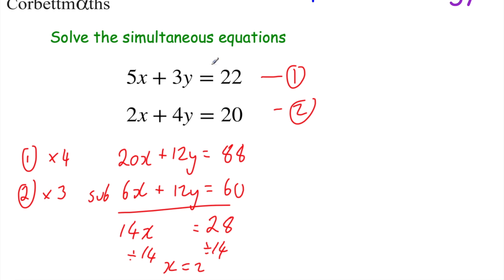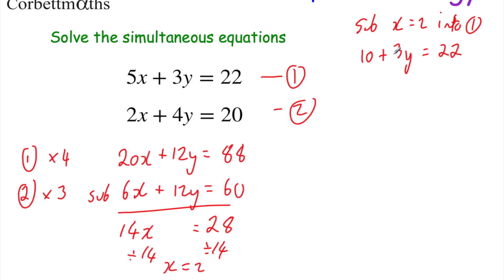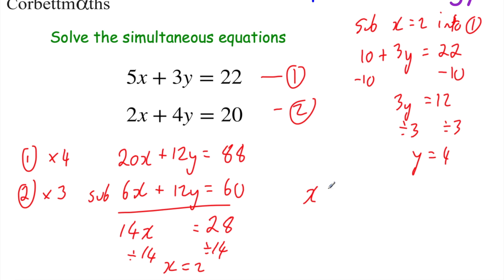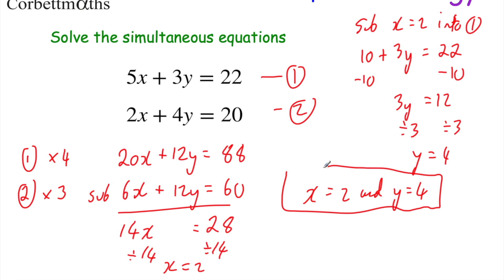Now let's find y by substituting x = 2 into equation 1. 5 times 2 is 10, so 10 + 3y = 22. Taking 10 away from both sides: 3y = 12. Dividing by 3: y = 4. So x = 2 and y = 4 — that's our solution.